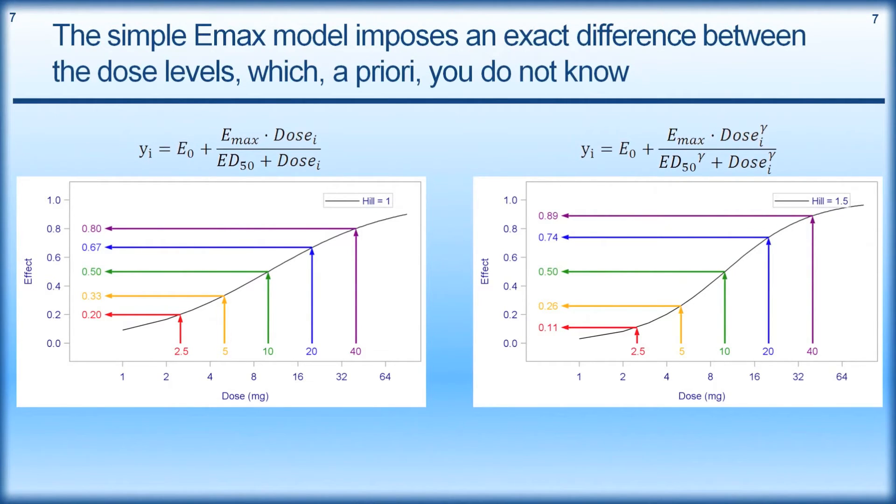So when we think about the simple Emax model, the major problem is that it poses an exact difference between the dose levels, which a priori we do not know. So here on the left, we have the simple Emax model. So the Hill coefficient is fixed to one here. So therefore it's gone away from the superscripts up here on dose and ED50. And we see that at the ED50, we get an effect of 50%. And if we half the dose, we get a third of the effect. And if we double the dose, we get two thirds of the effect. And if we go four times higher, we get 80% of the effect. And four times lower, we get 20% of the effect. So in terms of trying to understand how our drug works, we're often keen to understand the shape of this curve. Well, if we fix it with a Hill of one, we're a priori saying we know these answers.